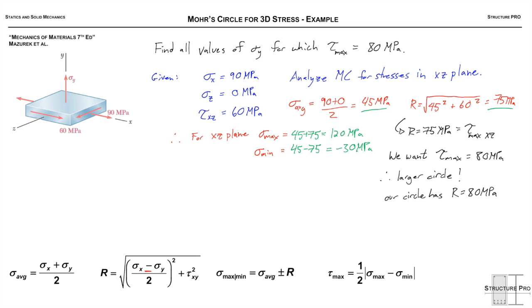Now it's time to solve for this Sigma Y. Let's think through this. Our Sigma max was 120 MPa, but let's just call that Sigma A. And our Sigma B was negative 30 MPa.